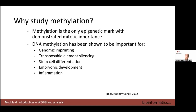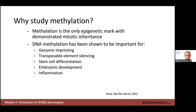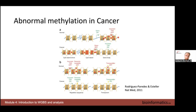Methylation has a demonstrated role in mitotic inheritance through the mechanism of having methylation on one strand reproduced on the complementary strand. DNA methylation has been shown to be important in genomic imprinting, silencing of transposable elements, stem cell differentiation, many developmental processes, and distinguishing different cell types. There's a certain level of stability associated with methylation marks once placed, making them important to characterize in cellular development. Methylation also has roles in inflammation and in cancer.